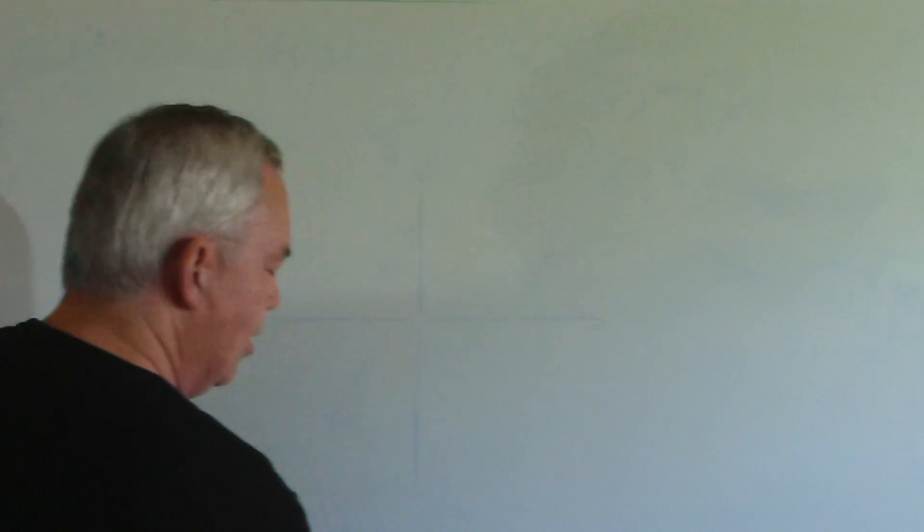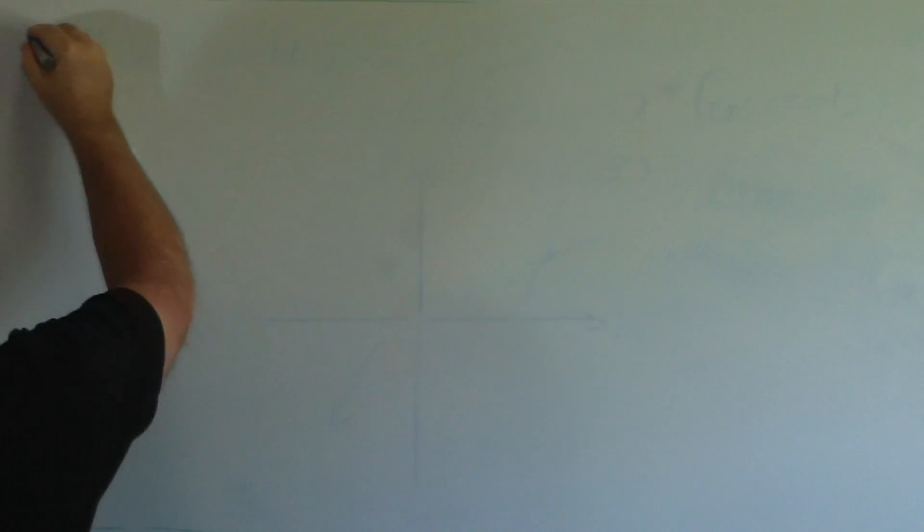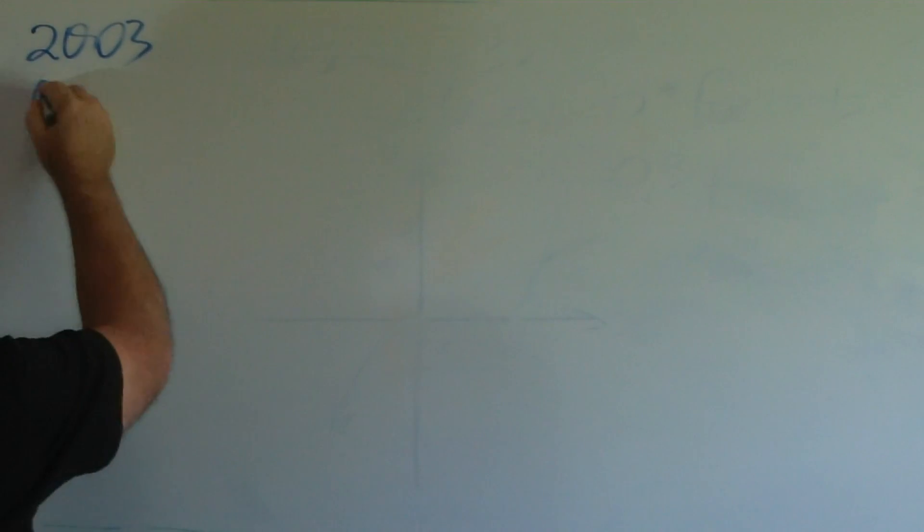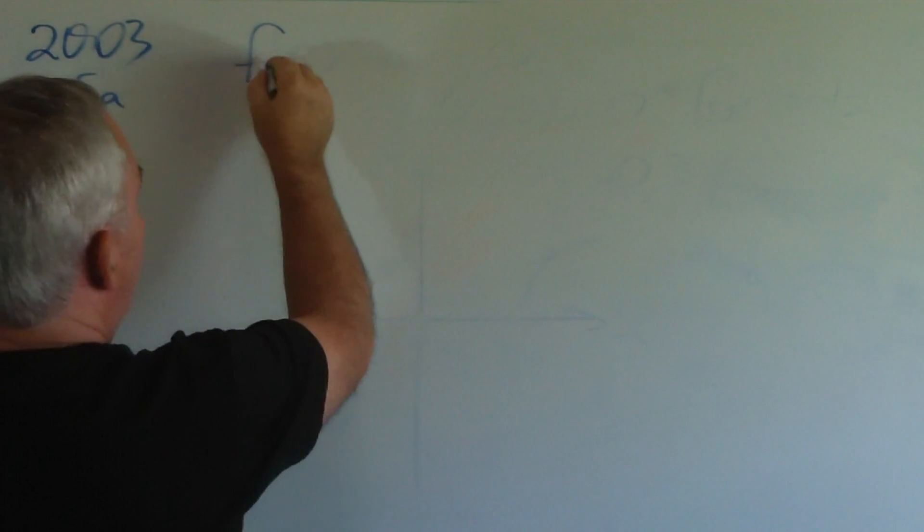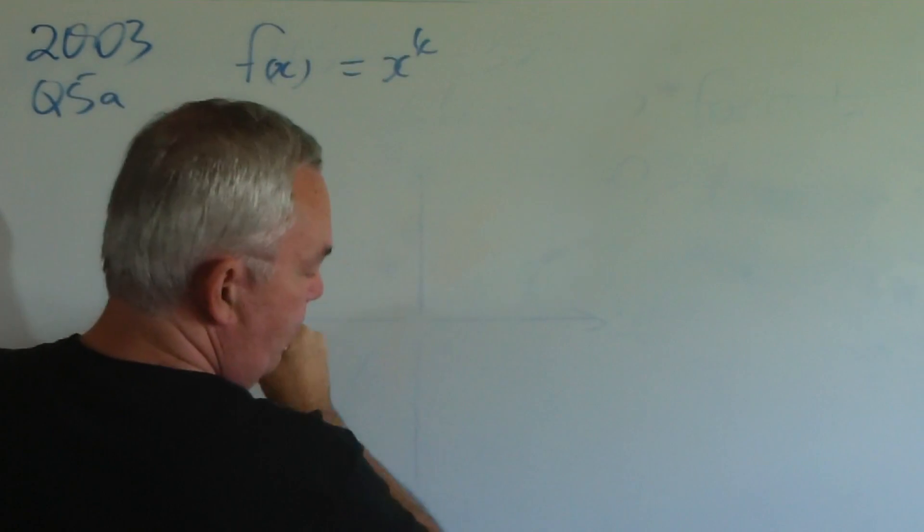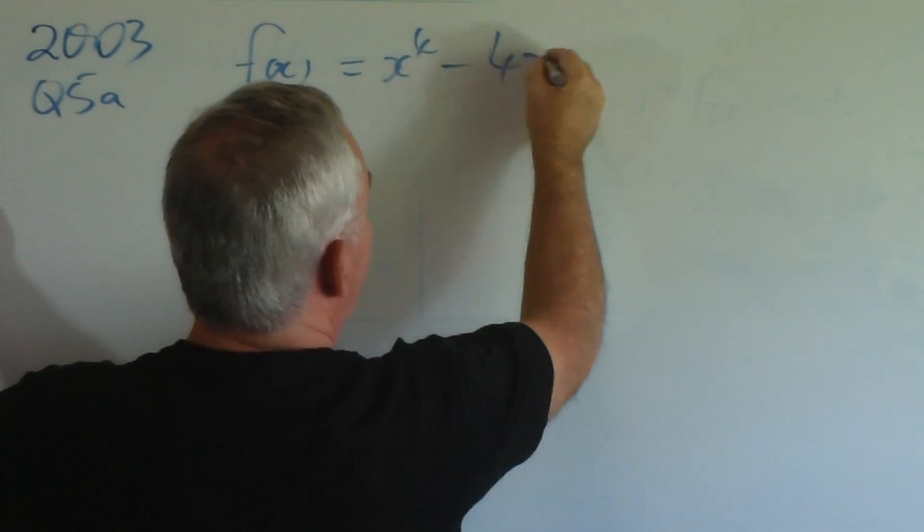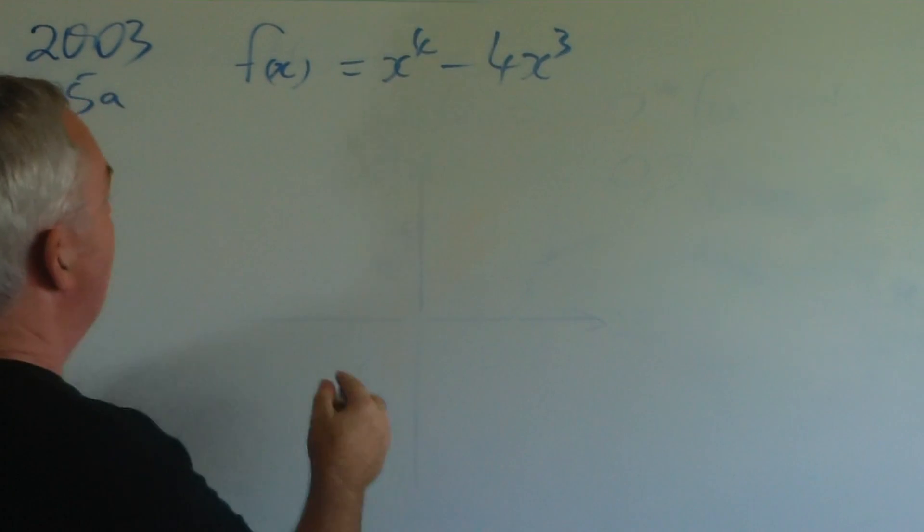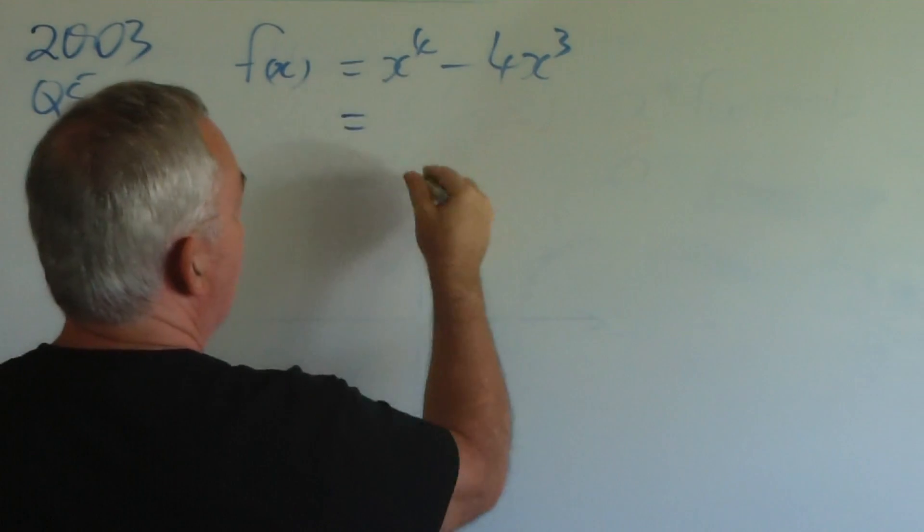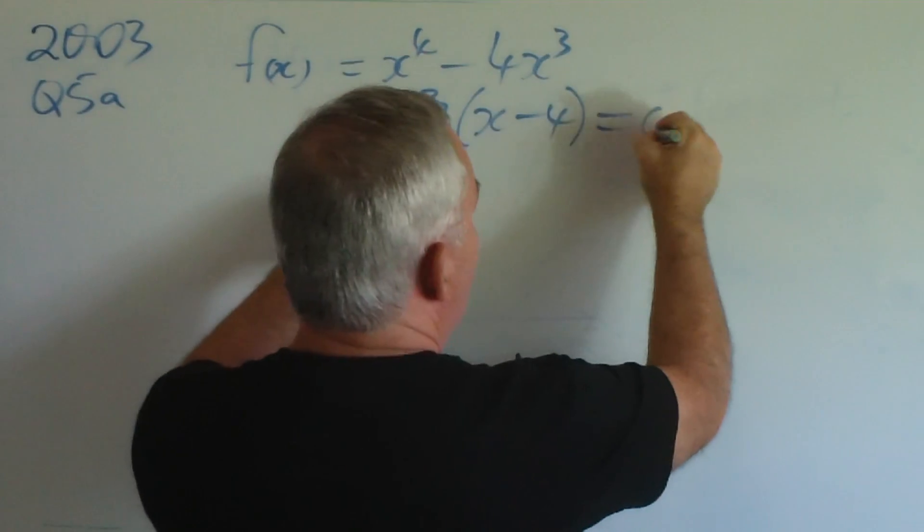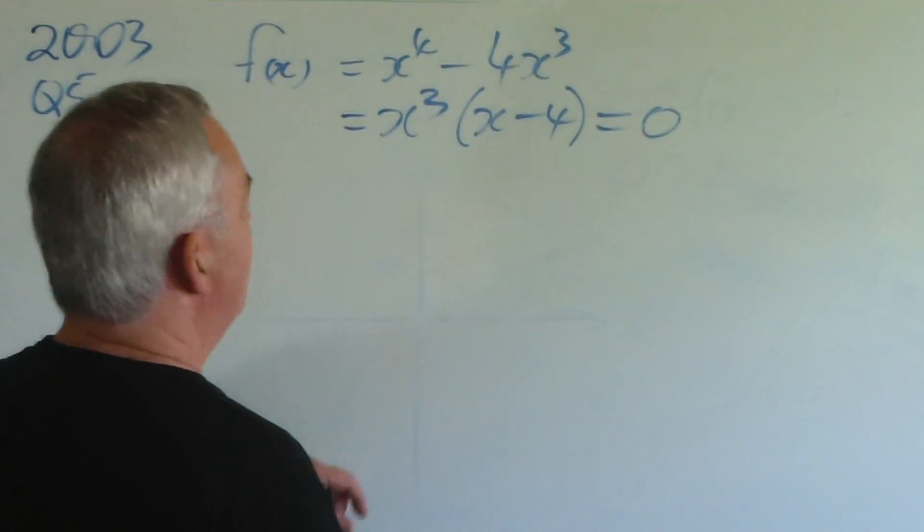So, let's go on. I realise I missed one, 2003, Question 5a. The function was x⁴ - 4x³. It also happened to be the 2007 question, question 6b in that paper. Common factor of x³. We set it equal to zero for the roots.